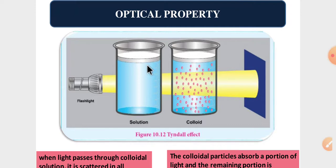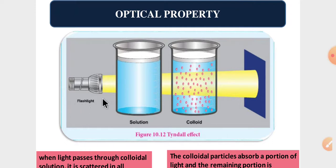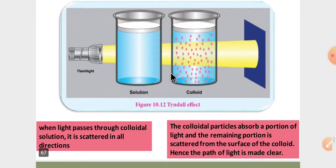The true solution is clear and homogeneous. When light passes through a homogeneous solution, it passes through clearly. In a colloidal solution, the light and the particles are very scattered, making the path visible and appearing dark.